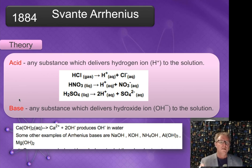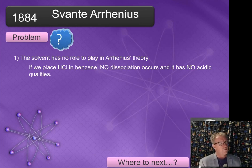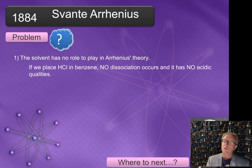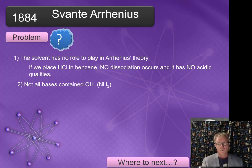The key point for Arrhenius is that an Arrhenius acid must ionize to produce H+ ions, and an Arrhenius base must produce OH- ions, but they have to be in solution. The problem is the solvent has no role to play in this theory. If we place hydrochloric acid in benzene — a different, non-polar solvent — no dissociation occurs and it has no acidic qualities. Also, not all bases contain OH; for example, ammonia does not have an OH- ion, yet it is a base.